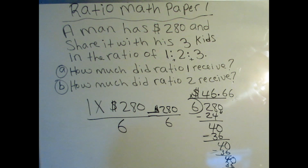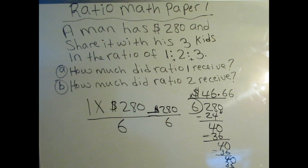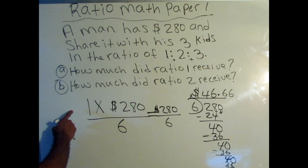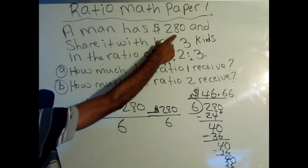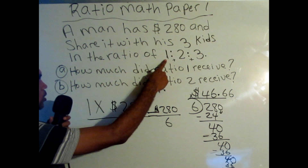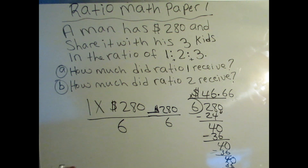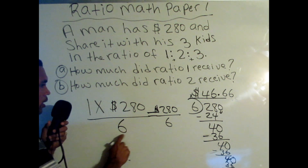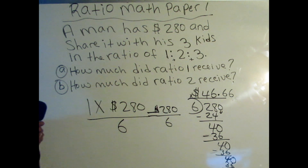So how much did ratio 1 receive? $46.66. Let's do a quick review of what we did to get this answer. Part A asks how much did ratio 1 receive, so it's ratio 1 times the total amount of money being shared, which is $280, divided by 6. Why 6? Because your total ratio is 1 plus 2 is 3, plus 3 is 6. We multiply 1 times 280 to get 280 divided by 6, and when we divide, we get $46.66. So ratio 1 got $46.66.